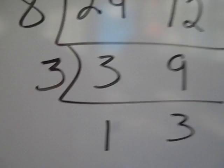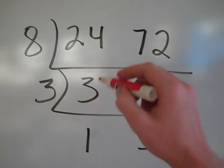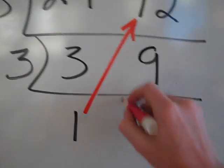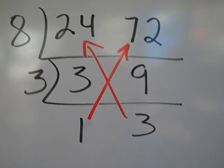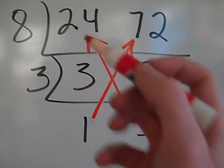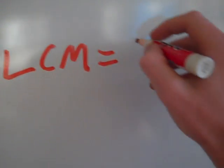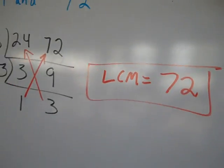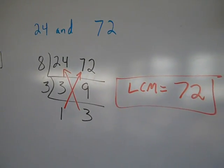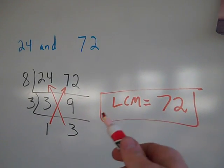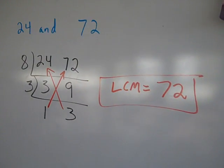Now, anytime you get a 1 at the bottom, that is like Christmas or Hanukkah or whatever you celebrate. It's like a gift because your choices are 24 times 3 or 72 times 1. Hmm, which one sounds easier? I think it's the 1 times 72. So, LCM in this case is 72. And I found that pretty quick considering the numbers were so big. This is a fantastic way to find least common multiple. Have fun!